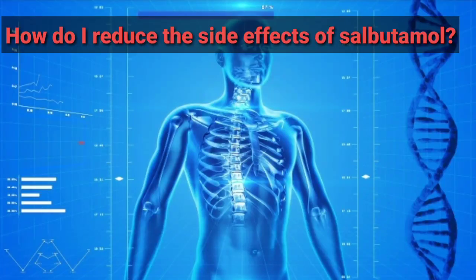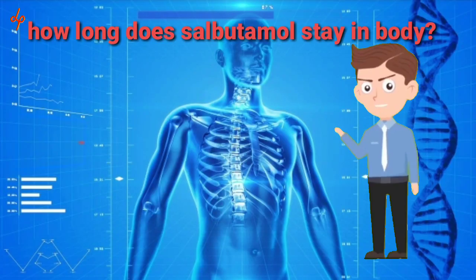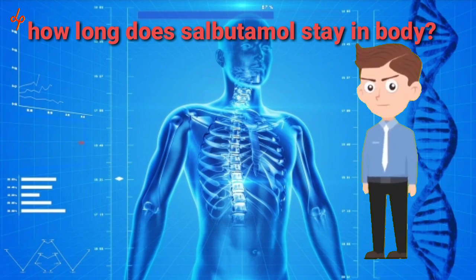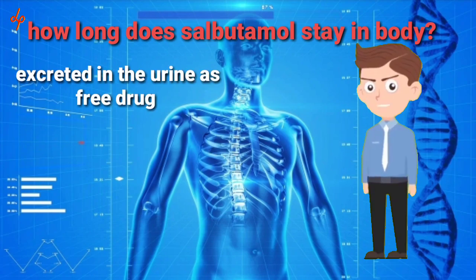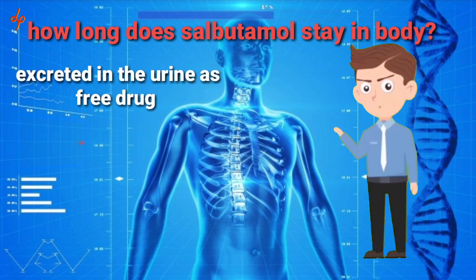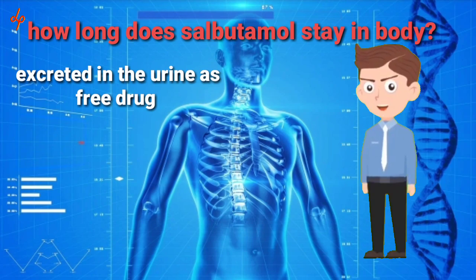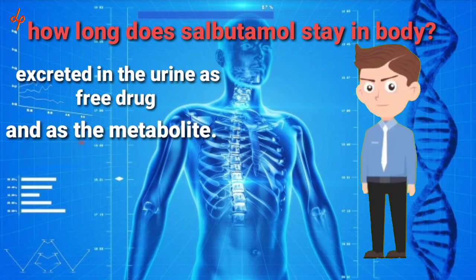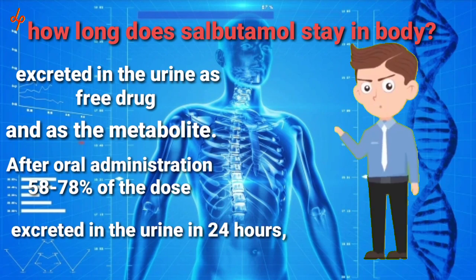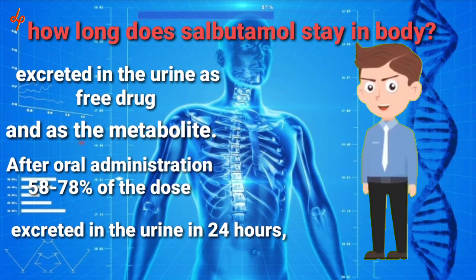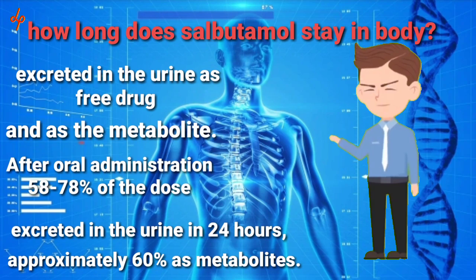The next question was: how long does Salbutamol stay in your body? Salbutamol is excreted in the urine as a free drug and as metabolites after oral administration. 58 to 78% of a dose is excreted in the urine within 24 hours, and 60% as metabolites.